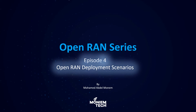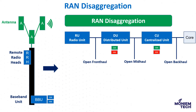Welcome to the fourth episode of the O-RAN series. Today we will discuss the O-RAN deployment scenarios. As discussed in previous episodes, the traditional RAN components RRU and BBU functionality was split into separate groups. For new radios, some functionality was moved into the radio unit, while the other BBU functions were split into a distributed unit (DU) and centralized unit (CU).